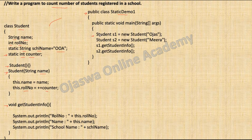The first statement creates a student object, but before any object is created, the JVM loads the class into memory. When the class is loaded, memory for static variables defined inside the class is allocated. So if you look at the code of class Student, we have two static variables. When the Student class is loaded into memory, memory for static variable school name and counter will be reserved.